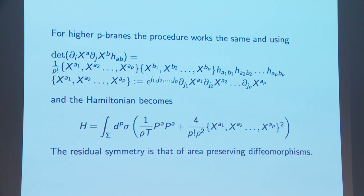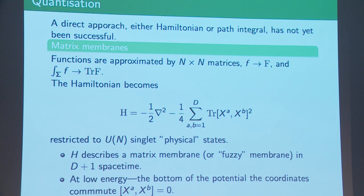If one looks at higher-dimensional objects, those are also of interest. The determinant now is going to have many more terms — it's still going to only have two epsilons, so we can pull out one epsilon and attach it with derivatives of the x's to get something that looks like the square of the Nambu brackets. The residual symmetry in all these cases is the area-preserving diffeomorphisms, and this can be reformulated as gauge field theories of area-preserving diffeomorphisms.